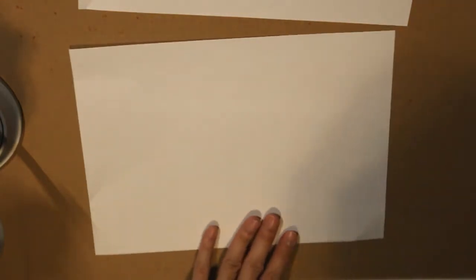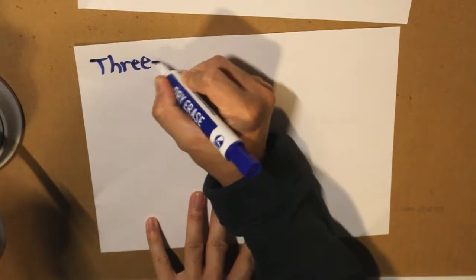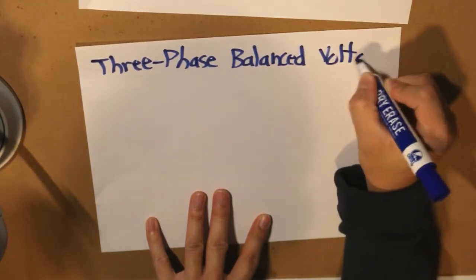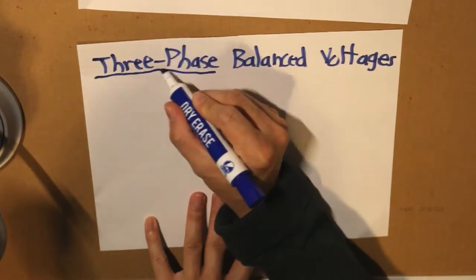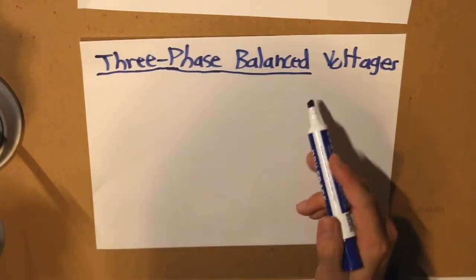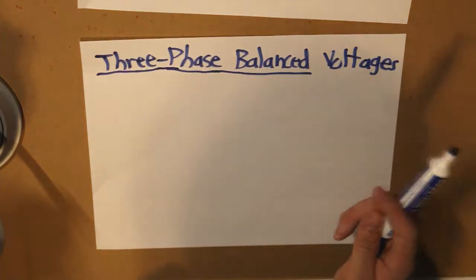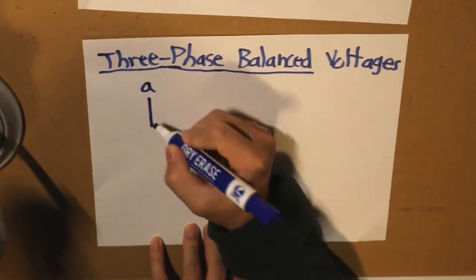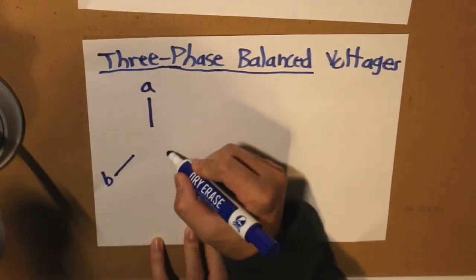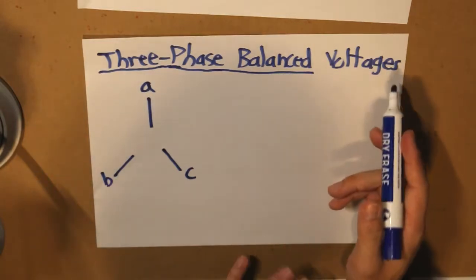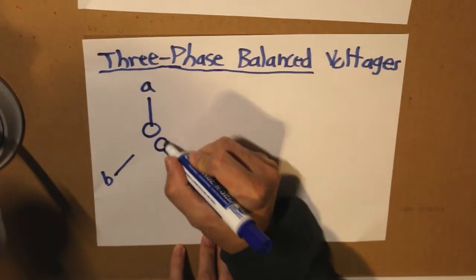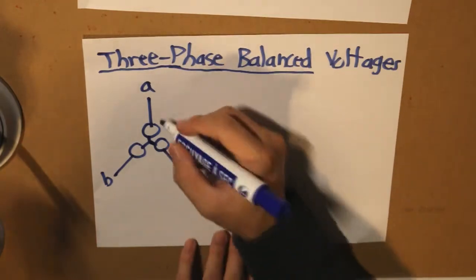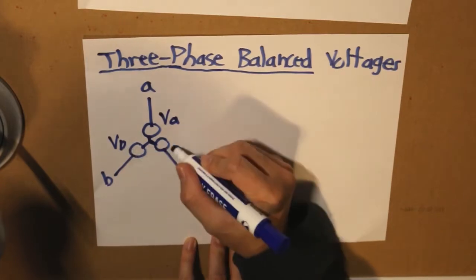Now we need to understand what three phase balanced voltages are. We've identified what each term means — three, phase, and balanced. Three phase balanced voltages means that we have three phases — line A, line B, and line C — and there is a voltage on each phase: Va, Vb, and Vc.